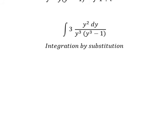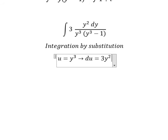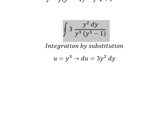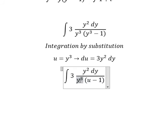So I will put u equal to y cubed. Then du equals 3y squared dy. So this expression we change by u, and 3y squared dy we change by du.